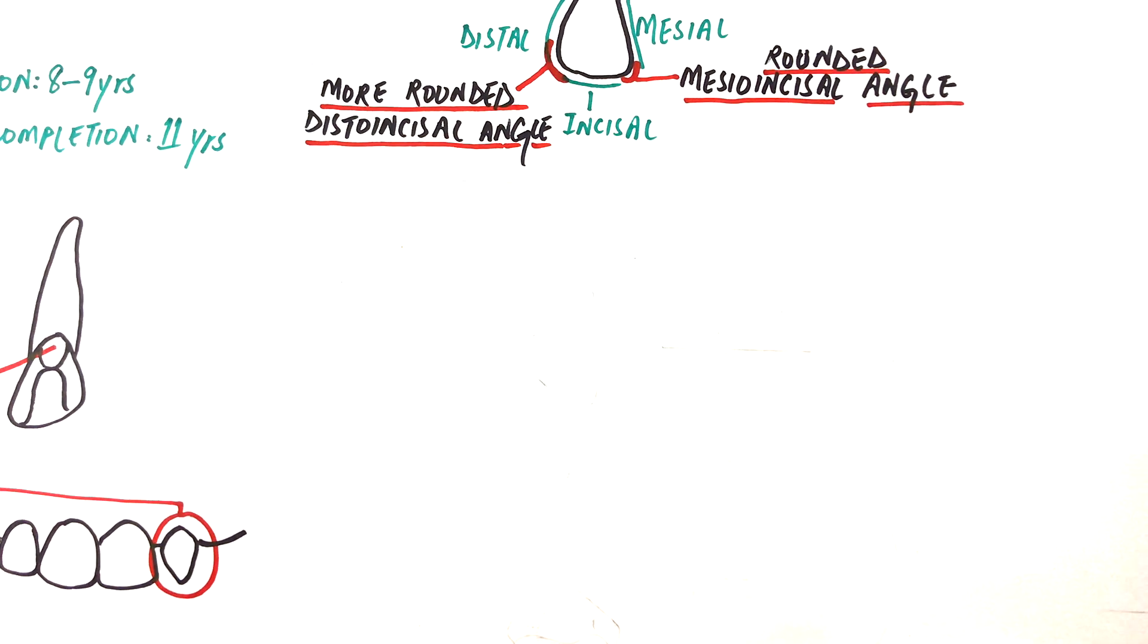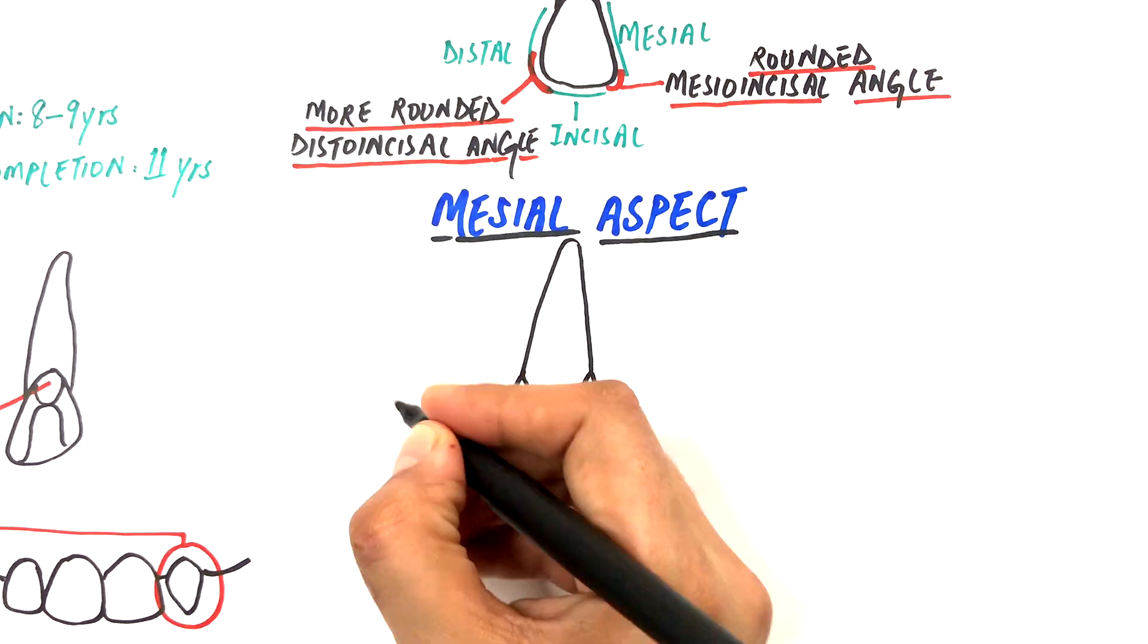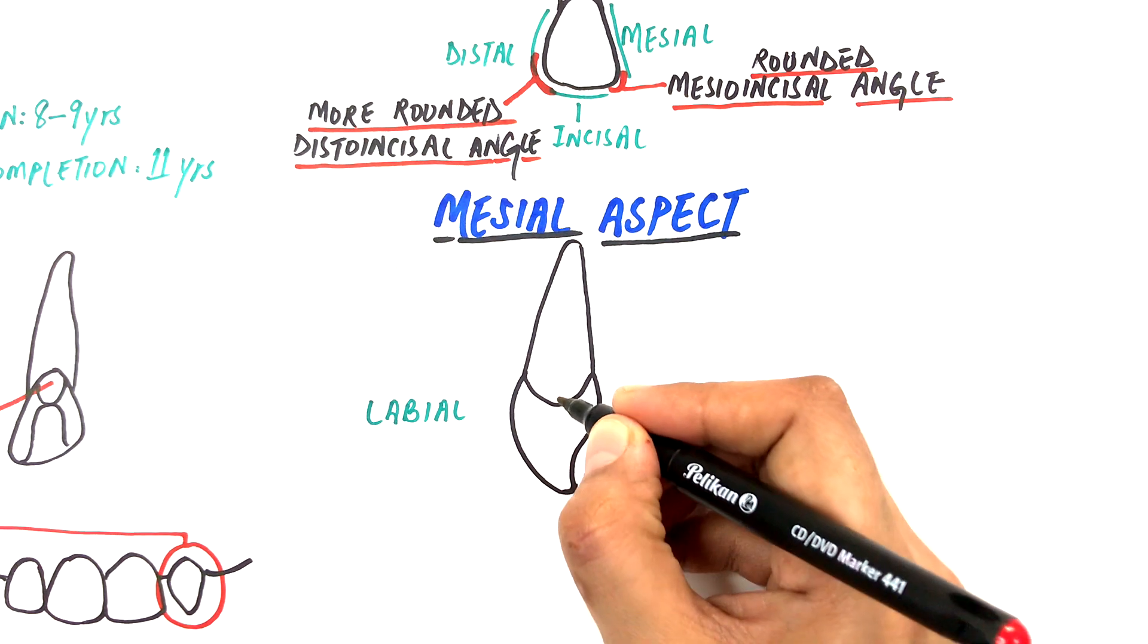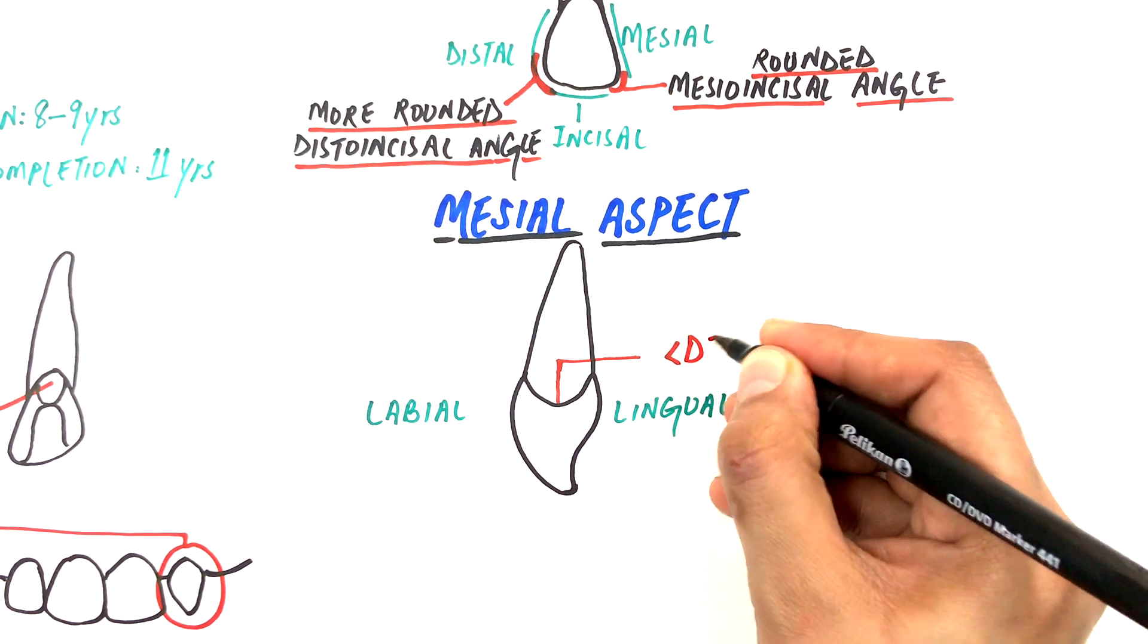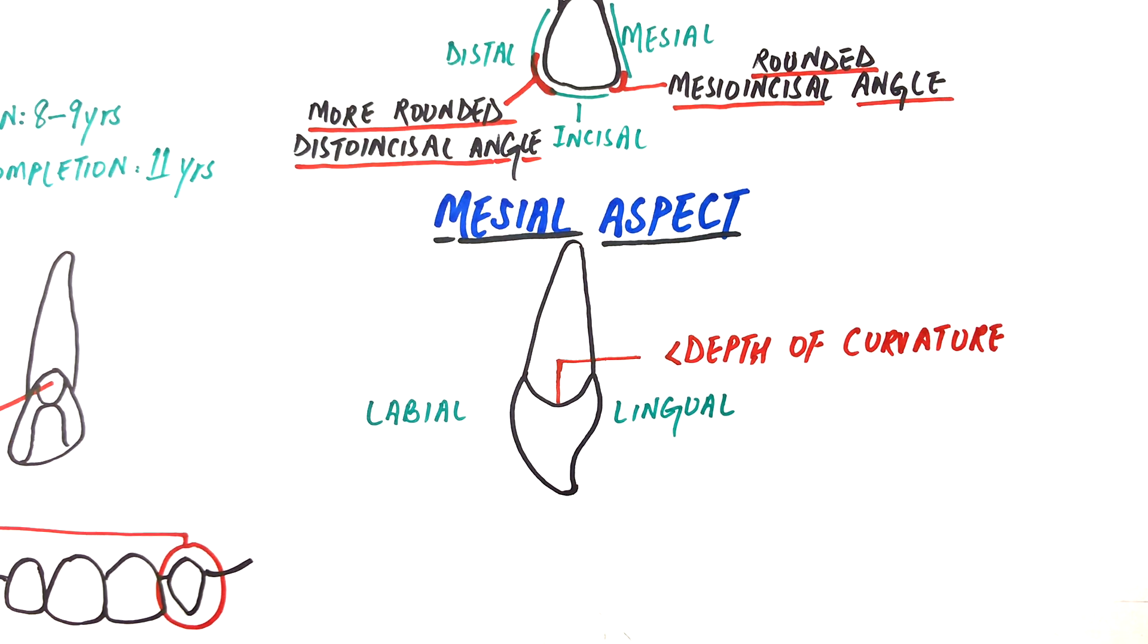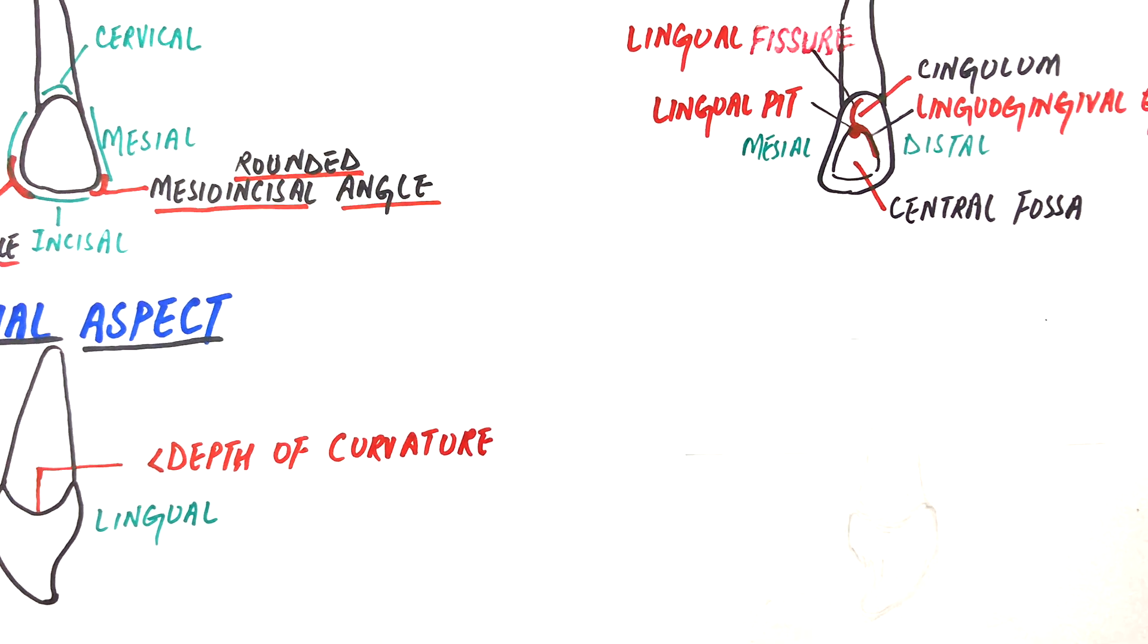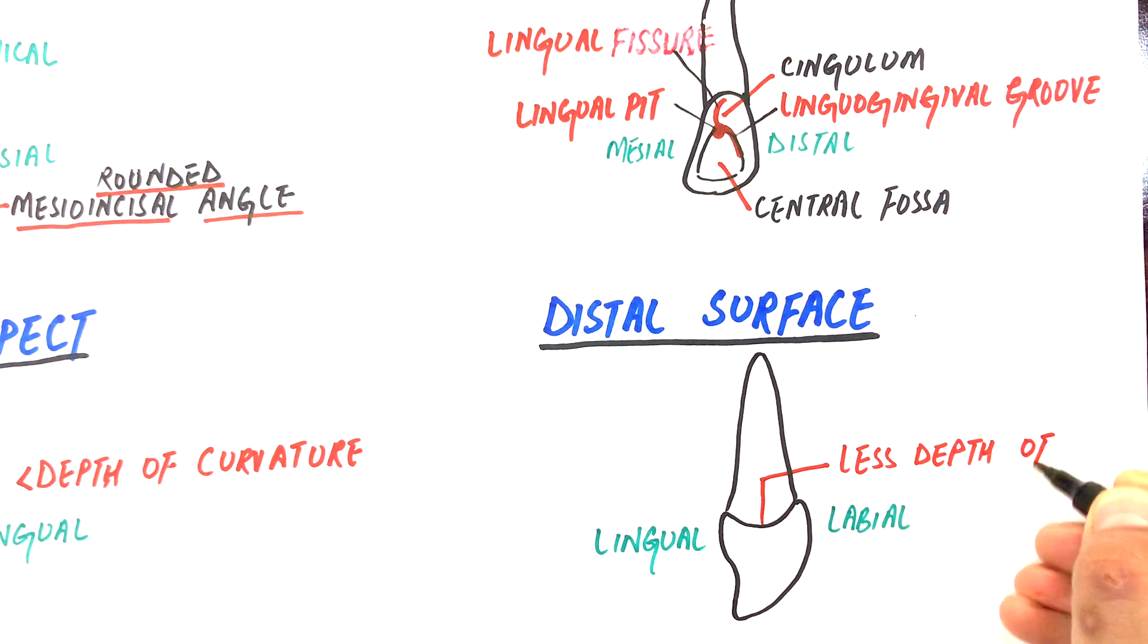The mesial surface of the maxillary lateral incisor is similar to the mesial surface of maxillary central incisor except for the cervical line showing comparatively less depth of curvature when compared with maxillary centrals. The distal surface is smaller and more convex in all dimensions than the mesial surface. The cervical line shows less depth of curvature when compared with the mesial surface of the tooth.